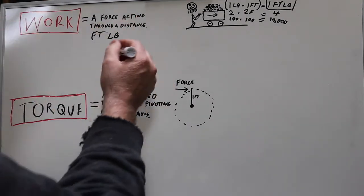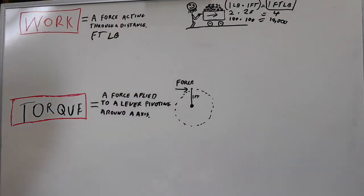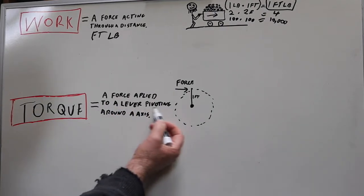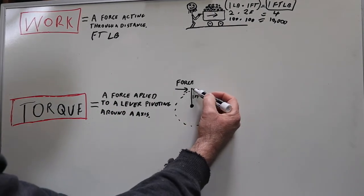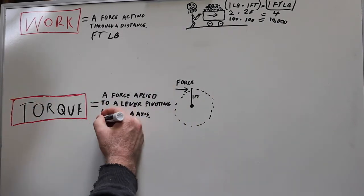So we've got this force acting through a distance in foot-pounds. Now of course we've all heard about torque - you know, you got to torque your cylinder heads to 70 foot-pounds or 90 foot-pounds or whatever it is. Well here we're talking about a force applied to a lever pivoting around an axis. This is also called a foot-pound.